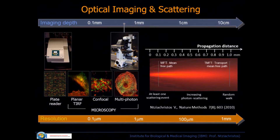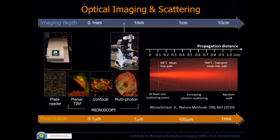The previous two talks described different approaches to handling scattering. Two-photon, on the other hand, works well because it simply rejects scattering altogether — it doesn't handle it, just throws it away. Confocal as well. Opto-acoustic is a similar approach where we actually don't care about scattering, and I will explain why. Let me connect to the previous talks and give the motivation for moving to opto-acoustic.